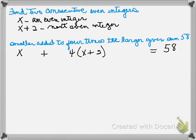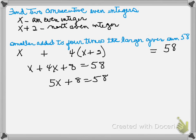We will distribute the 4, so we'll have X plus 4X plus 8 equals 58. X plus 4X is 5X, so 5X plus 8 equals 58. Then if we subtract 8 from both sides, we will have 5X equals 50.